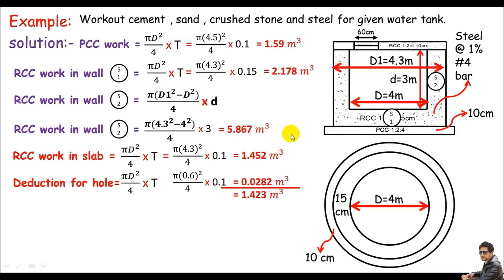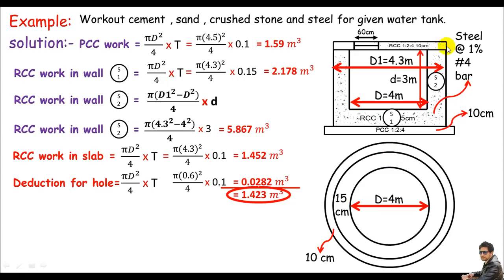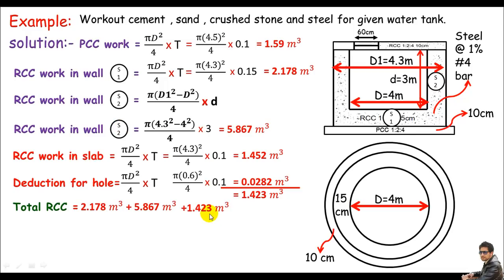Now I'll find the total RCC work by adding all components: RCC base (segment 1) = 2.178 m³, RCC wall (segment 2) = 5.867 m³, and RCC slab = 1.423 m³. Total RCC work = 2.178 + 5.867 + 1.423 = 9.468 cubic meters.